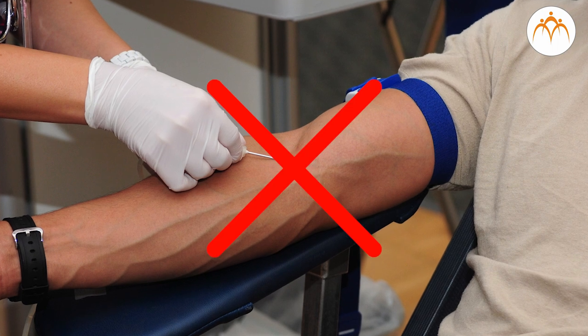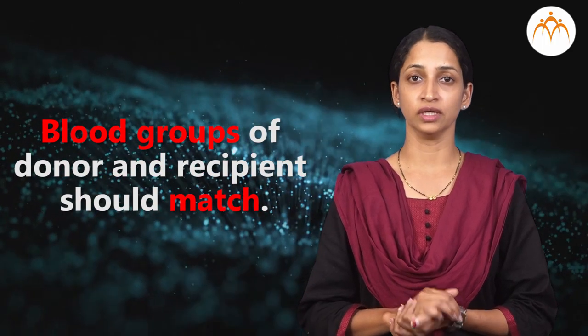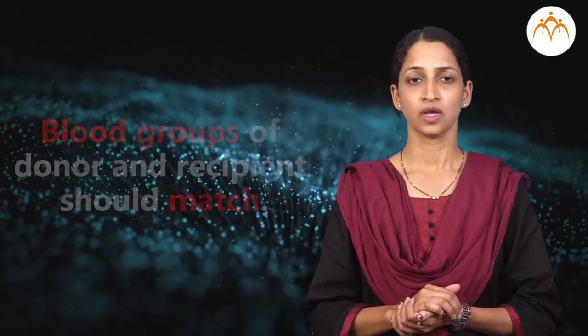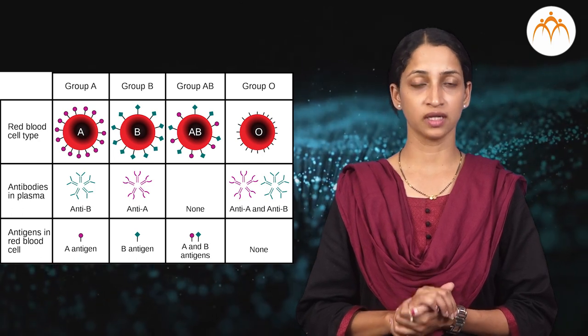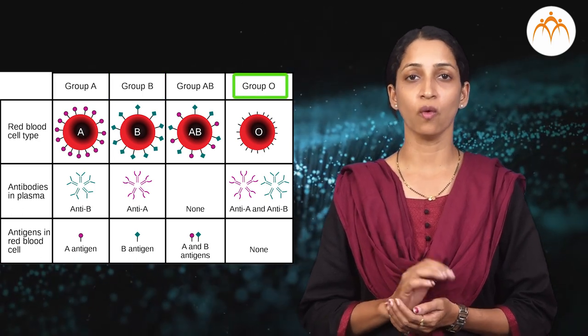Nowadays, when blood is collected, its components are separated as plasma, blood cells, etc., and they are stored. A recipient cannot accept blood from any donor — blood groups of donor and recipient should match. In human beings, even though blood of each person has the same basic components, there are differences. There are specific proteins like antigens and antibodies in our blood. Antigens are present on the surface of RBCs and antibodies are in plasma. Based on these, there are four main human blood groups: A, B, AB and O. This was discovered by scientist Karl Landsteiner, who won the Nobel Prize for this work.